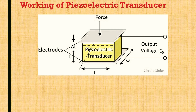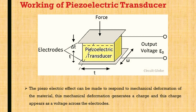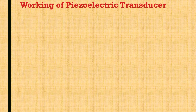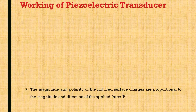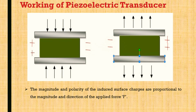The width and thickness of the crystal are t and w. The piezoelectric effect can be made to respond to mechanical deformation of the material. This mechanical deformation generates charges, and these charges appear as a voltage across the electrodes. The magnitude and polarity of the induced surface charges are proportional to the magnitude and direction of the applied force. If force is applied in the inward direction, the voltage polarity is positive on the left-hand side and negative on the right-hand side. If force is applied in the outward direction, the polarity is negative on the left and positive on the right.